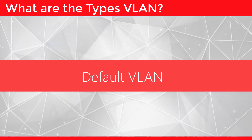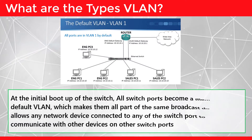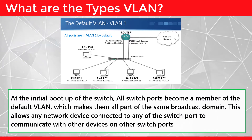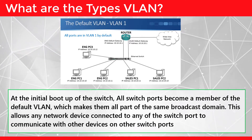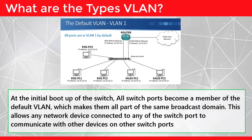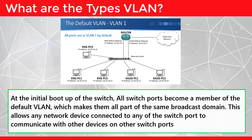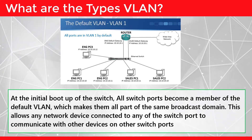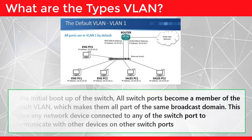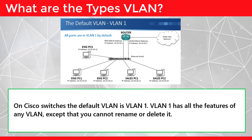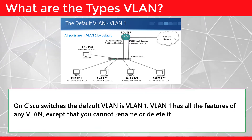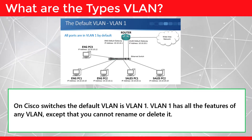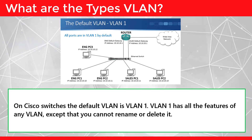Default VLAN: At the initial boot up of the switch, all switch ports become a member of the default VLAN, which makes them all part of the same broadcast domain. This allows any network device connected to any of the switch ports to communicate with other devices on other switch ports. On Cisco switches, the default VLAN is VLAN1. VLAN1 has all the features of any VLAN except that you cannot rename or delete it.